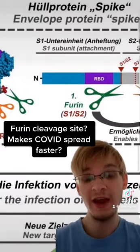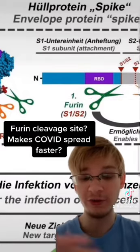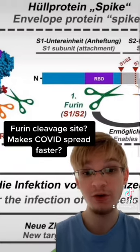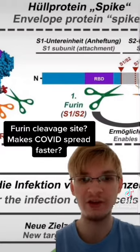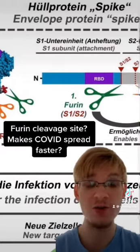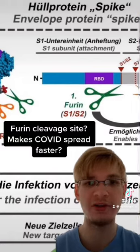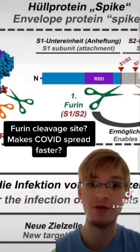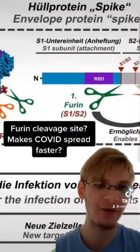Now, in between the S1 and S2 subunits, we have two protease cleavage sites: we have the S1/S2, or furin cleavage site, and we have the S2-prime, or fusion peptide priming site.